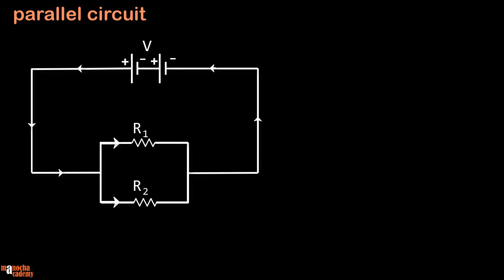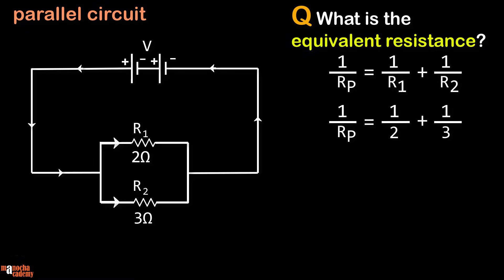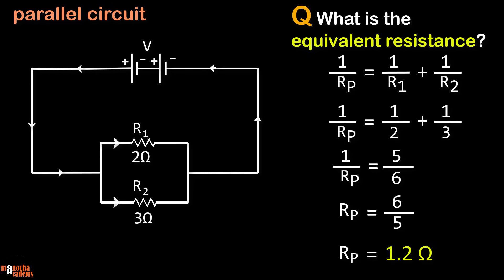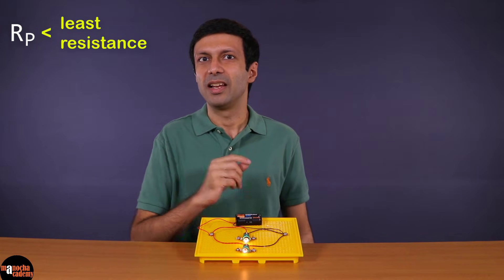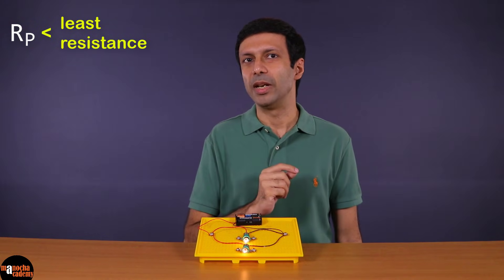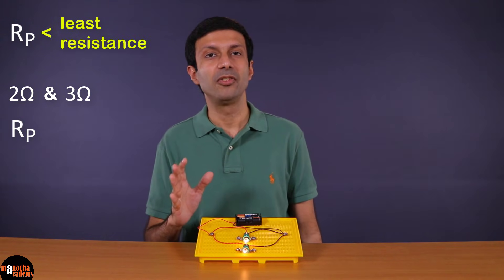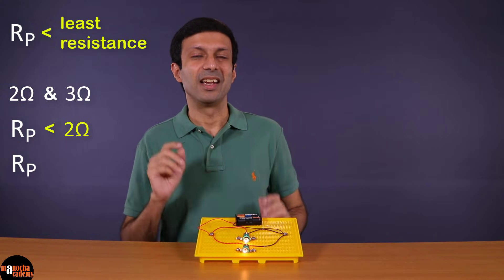Let's take an example. If you have a parallel combination of two resistances, 2 Ohm and 3 Ohm, what will be the equivalent resistance? It's going to be 1.2 Ohms. Using the formula: 1/Rp = 1/2 + 1/3. To get Rp we take the reciprocal, so Rp = 6/5, which equals 1.2 Ohms. One interesting thing about the equivalent parallel resistance is that it is lesser than the least resistance. So even without calculating, we can say that for a parallel combination of 2 Ohms and 3 Ohms, the equivalent resistance will be less than 2 Ohms — and indeed it is 1.2 Ohms.